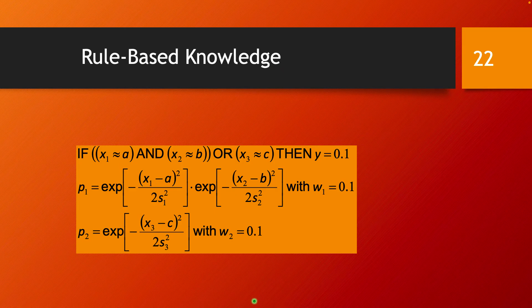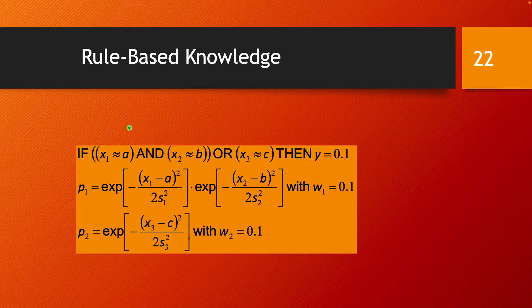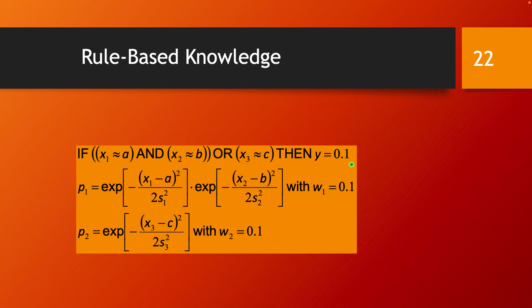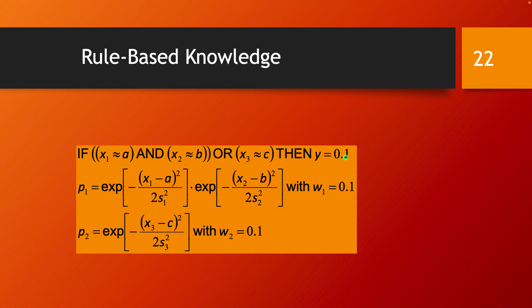For example, if you have in your data set some sort of a rule, some sort of knowledge of this type that says if X1 is close to A, it's about A and also X2 is about B, then you have the output is 0.1. And the same also happens if you have X3 to be about C, then you have this output 0.1. And so this kind of knowledge you can integrate in RBF networks by using a combination of Radial Basis Functions.